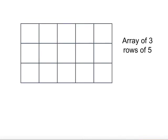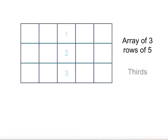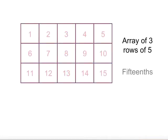Let's try this one. We have an array of three rows of five. If we look at these lines, we can see five fifths to make the whole. If we look across this way, we can see three thirds makes the whole. Or if we look at the individual squares, we can see fifteen fifteenths makes the whole.